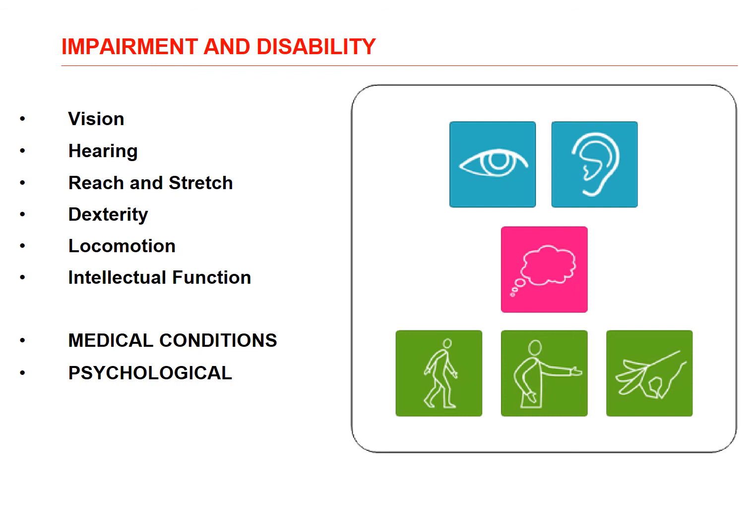It is also very important to consider overarching medical conditions that have an effect on all those other things, including heart disease, diabetes, epilepsy and so forth, as well as psychological conditions such as dementia, which may have an overall effect on people's ability to use a space or a building.